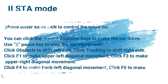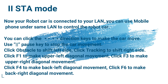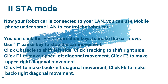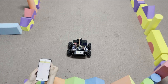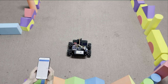Click the up, down, left, or right direction keys to make the car move. Use the stop/pause key to stop movement. Click Obstacle to shift to the left side, click Tracking to shift to the right side. Click F1 for upper-left diagonal movement, F3 for upper-right diagonal, F4 for back-left diagonal, and F6 for back-right diagonal movement.